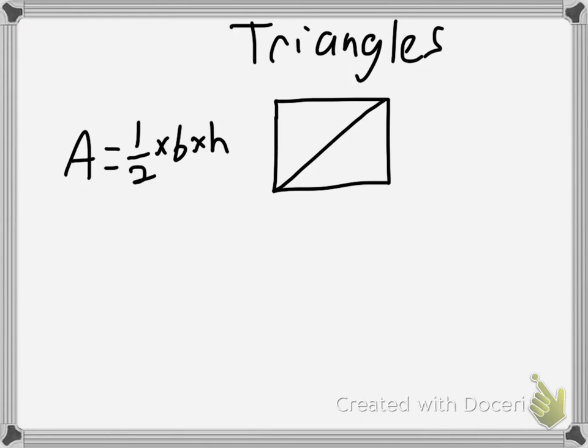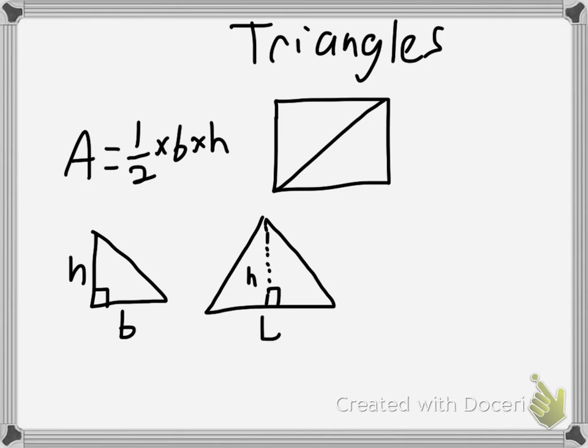And there's three types of triangles that you'll see. There's the right triangle. You know it's right because of this right angle. There's triangles that look like this, where the height is on the inside. And then there's the base. And then there are triangles where you'll see the height actually on the outside.